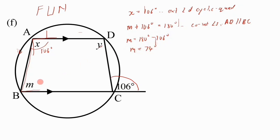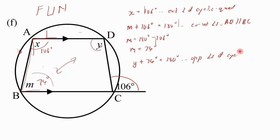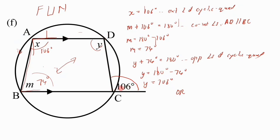With m equal to 74, to find y we use the fact that m and y are opposite angles of a cyclic quad. So y plus 74 degrees equals 180 degrees — opposite angles of cyclic quad. Therefore y equals 180 minus 74, giving y equals 106 degrees. Alternatively, you could use alternate angles since the parallel lines form a Z-shape, and say y equals 106 degrees — alternate angles, AD parallel to BC.